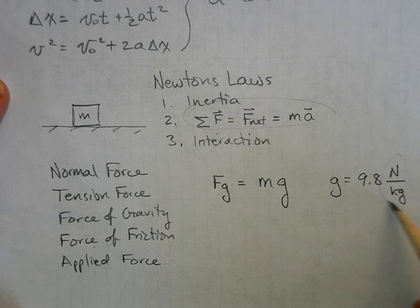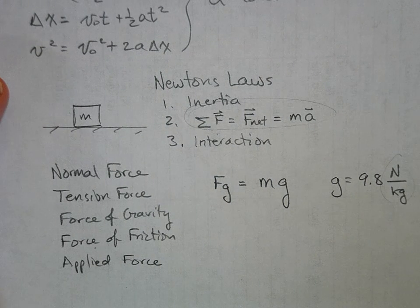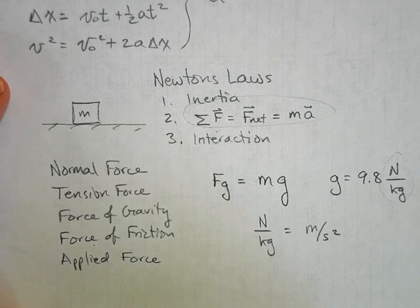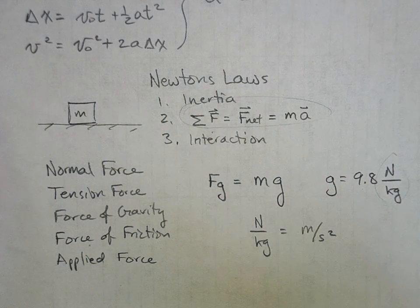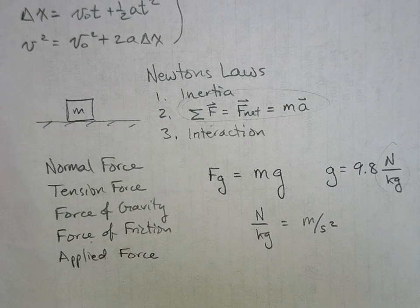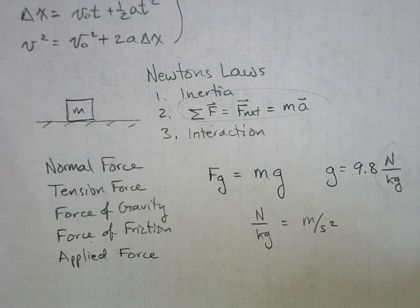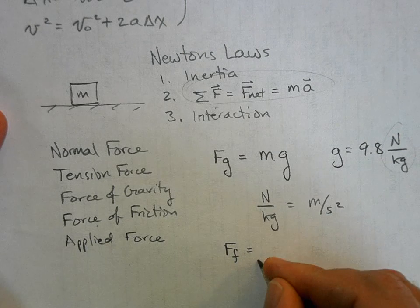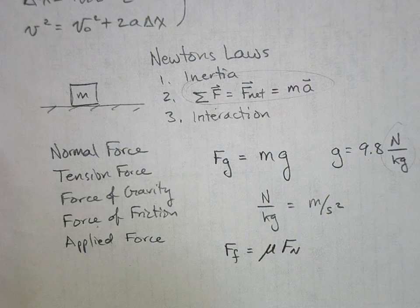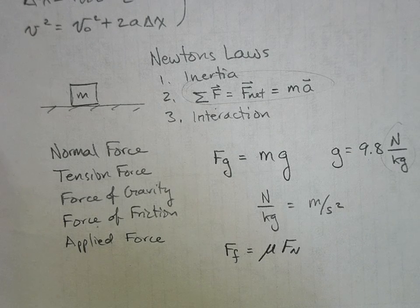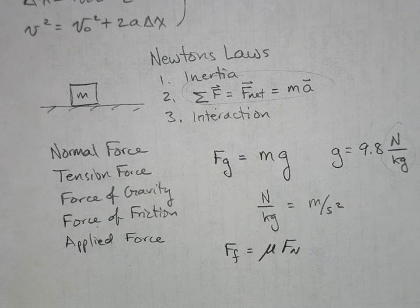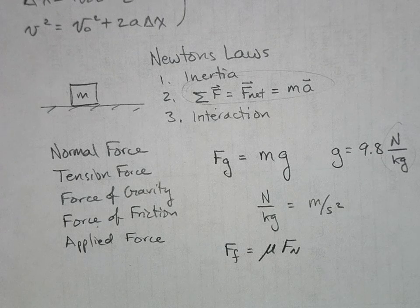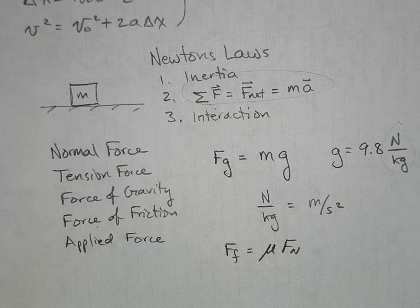Now, newtons per kilogram reduces to meters per second squared, so a newton per kilogram is equal to a meter per second squared. So these things are equivalent, but this is how I like to think of what g is. And this is the strength of the gravitational field. So we've got F = ma, we've got force of gravity equals mg, then we have the force of friction is equal to the coefficient of friction times the normal force. Now, what is the normal force? Remember, the normal force is the force between the surfaces of two objects pressed together, and it's perpendicular to those surfaces. That's what normal means in mathematics—is perpendicular.